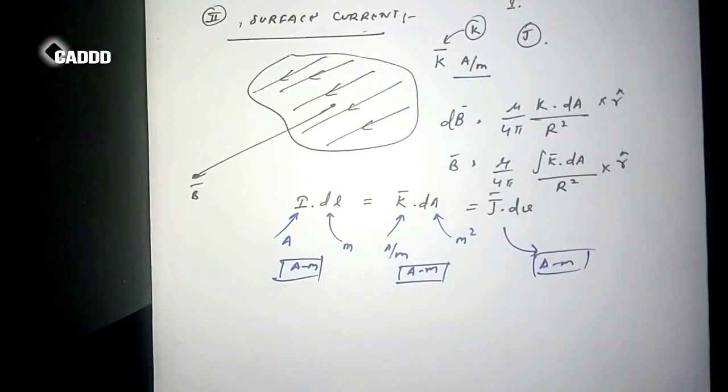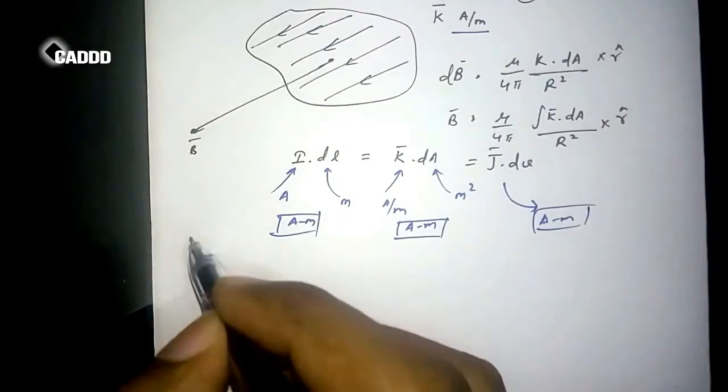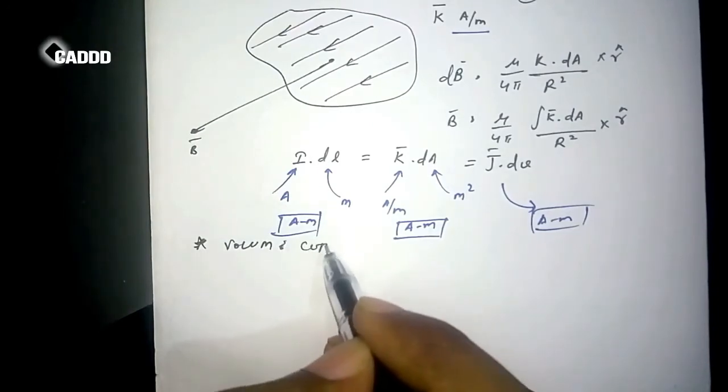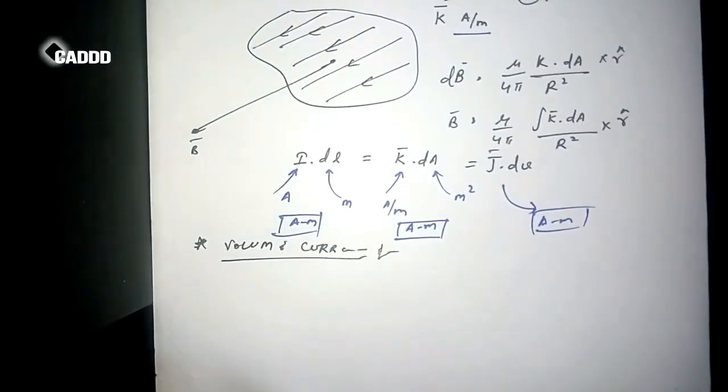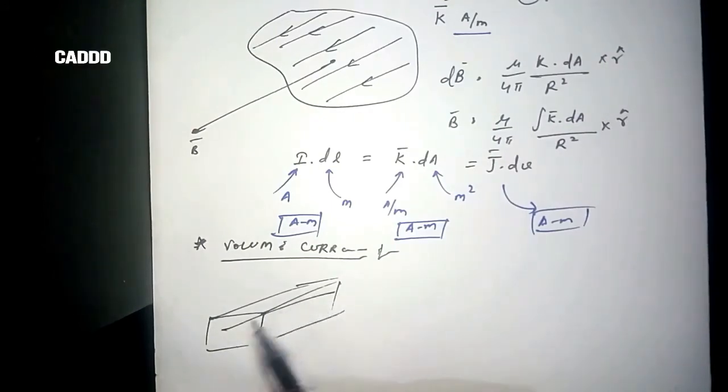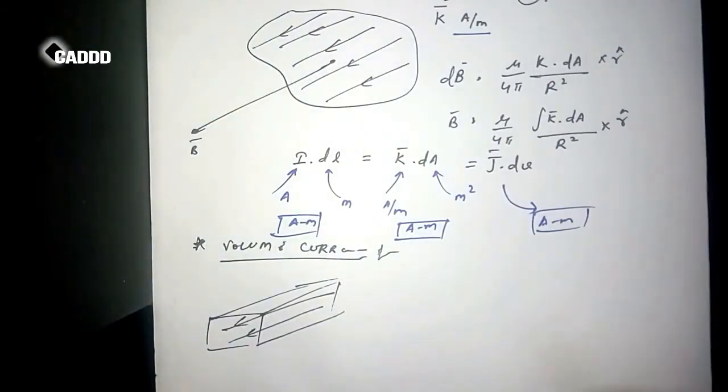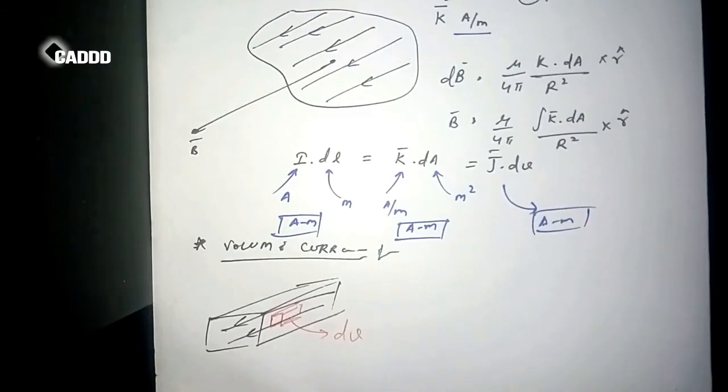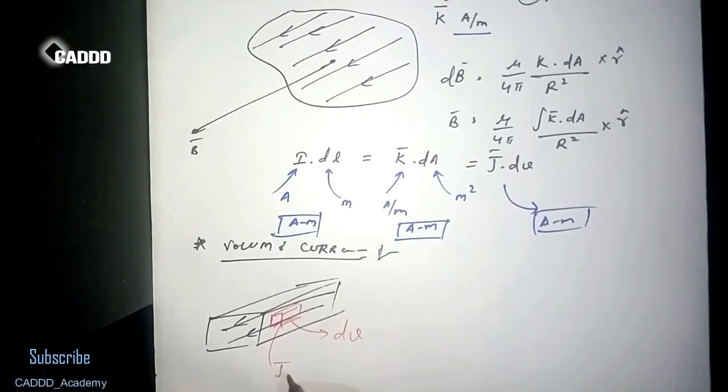Volume current: let's say we have a volume like this, and current is moving like this. So again here we will take a small amount of volume which has volume of dV, and the current passing, volume current passing, is J.